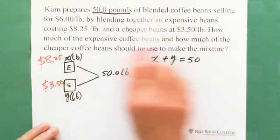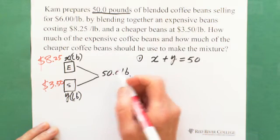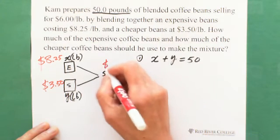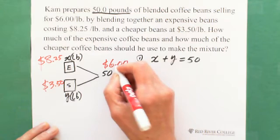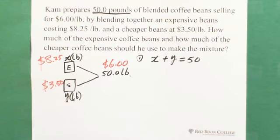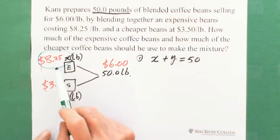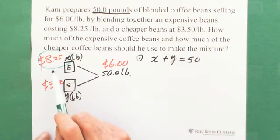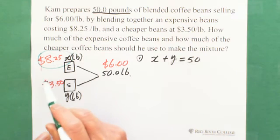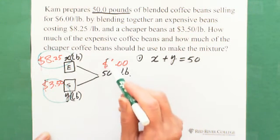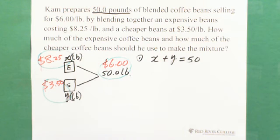Then selling price is $6.00 per pound. So this is $6.00. That's why we can write the second equation, which is about the price, the total money. So that means this part is how much money for total expensive one. This one is how much money for cheaper one. And this is eventually how much for the total. Right?